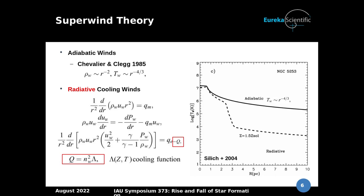In these solutions we see the density and temperature as a function of radius — they decline by a power of minus two and power of minus four over three respectively. However, there is a semi-analytic study by Silich in which they couple radiative cooling functions to the fluid model, and on the right you see departure from adiabatic solutions because of radiative cooling.